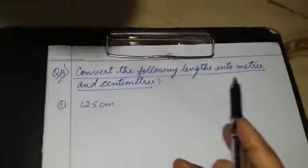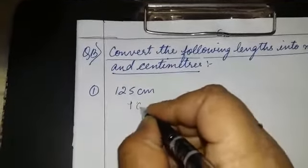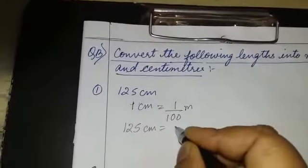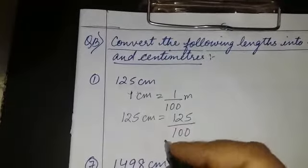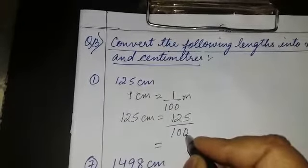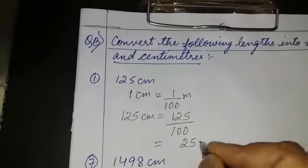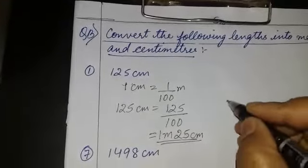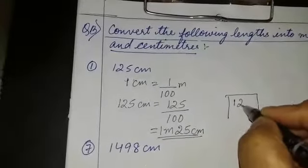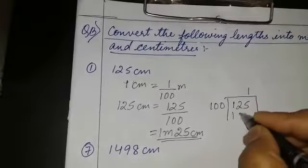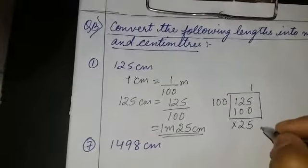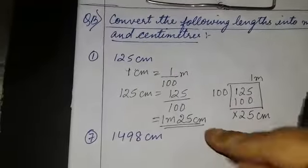Question B: convert the following lengths into meters and centimeters. First question is 125 centimeter. We use the formula: 1 centimeter is equal to 1/100 meter, so 125 cm equals 125 ÷ 100. The last two digits become your centimeters and the remaining digits become your meters. Dividing: 100 goes once into 125, remainder 25. So the answer is 1 meter 25 centimeter.